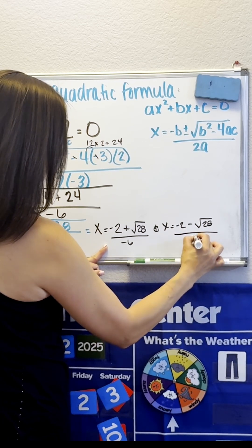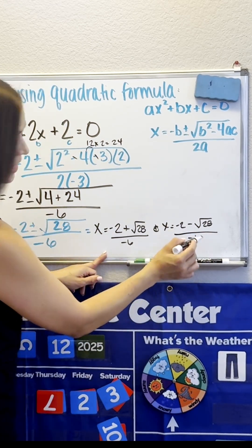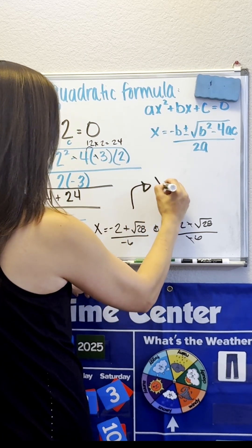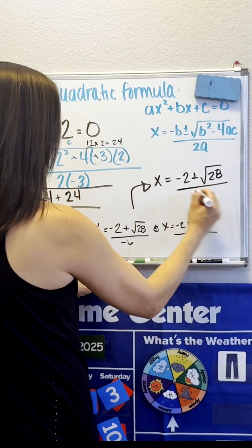all over negative 6. Which in this case, the negatives cancel each other out, so our actual full answer is all over positive 6.